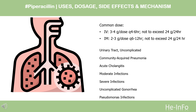Community-acquired pneumonia: 6–8 g/day IV or IM; 100–125 mg/kg/day divided every 6–12 hours. Acute cholangitis: 4 g every 6 hours. Moderate infections: 2–3 g/dose IV or IM every 6–12 hours, not to exceed 2 g IM per site.